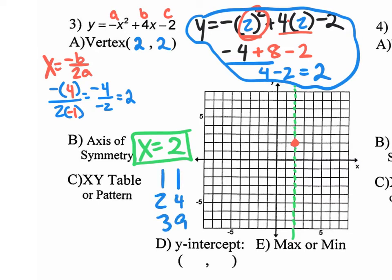Number 3 has a negative a value, so it's opening down. Instead of going 1 over 1 up, you go 1 over 1 down. Then go back to the vertex for 2-4: go 2 over and 4 down. And for 3-9: go 3 over and 9 down. Then simply mirror all coordinates over to the other side of the axis of symmetry. Make sure you have equal spaces — one unit away on both sides, two units away on both sides, three units away on both sides. Draw the parabola. That's the most important part — you get three points just for the graph.